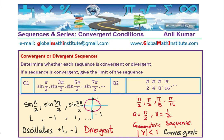If the sequence is convergent, give the limit. The number is decreasing, so ultimately, as n approaches infinitely large, this sequence approaches 0. It is decreasing to 0.